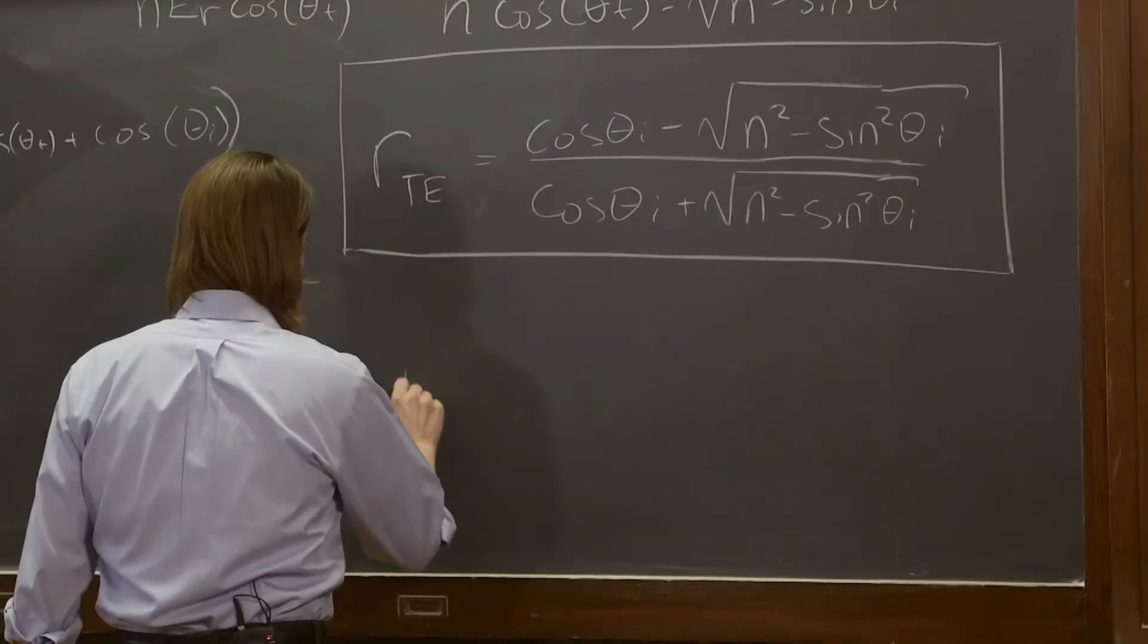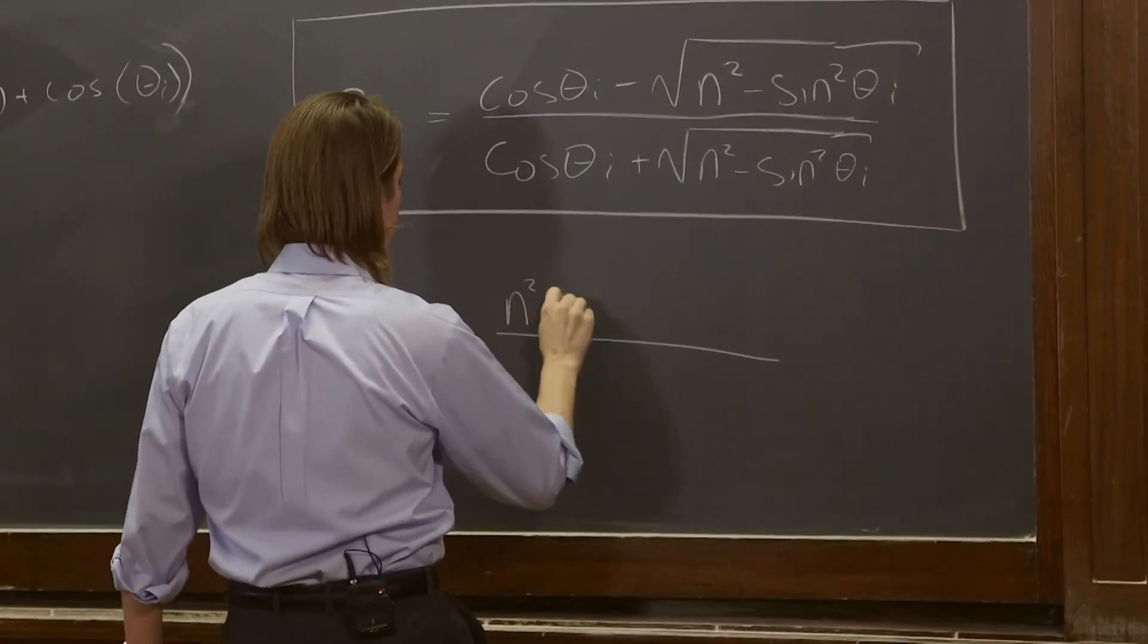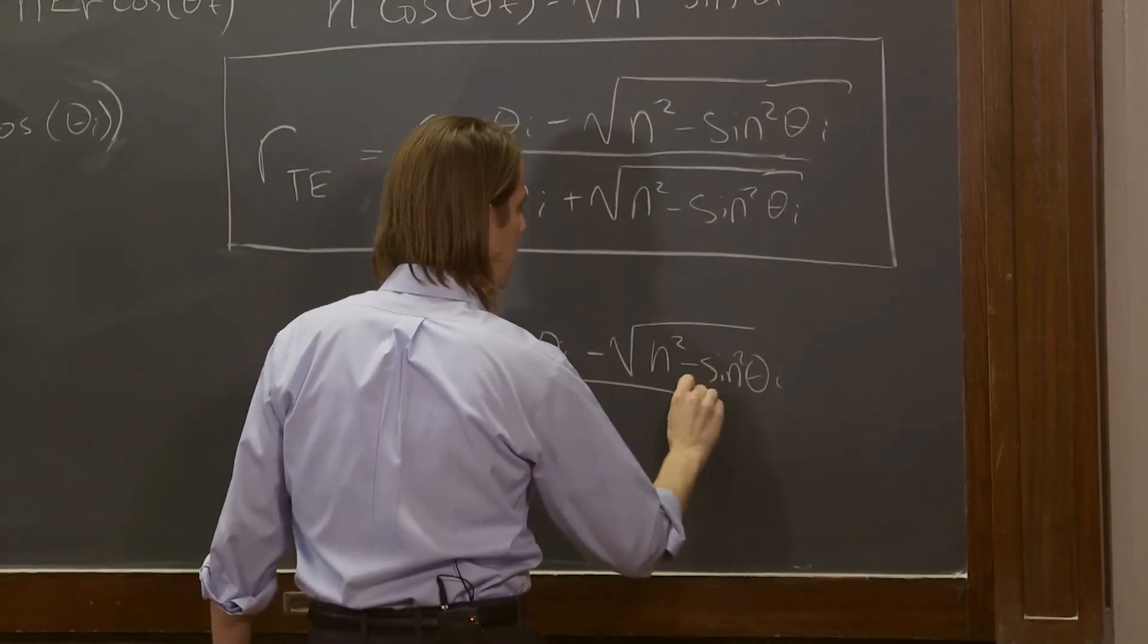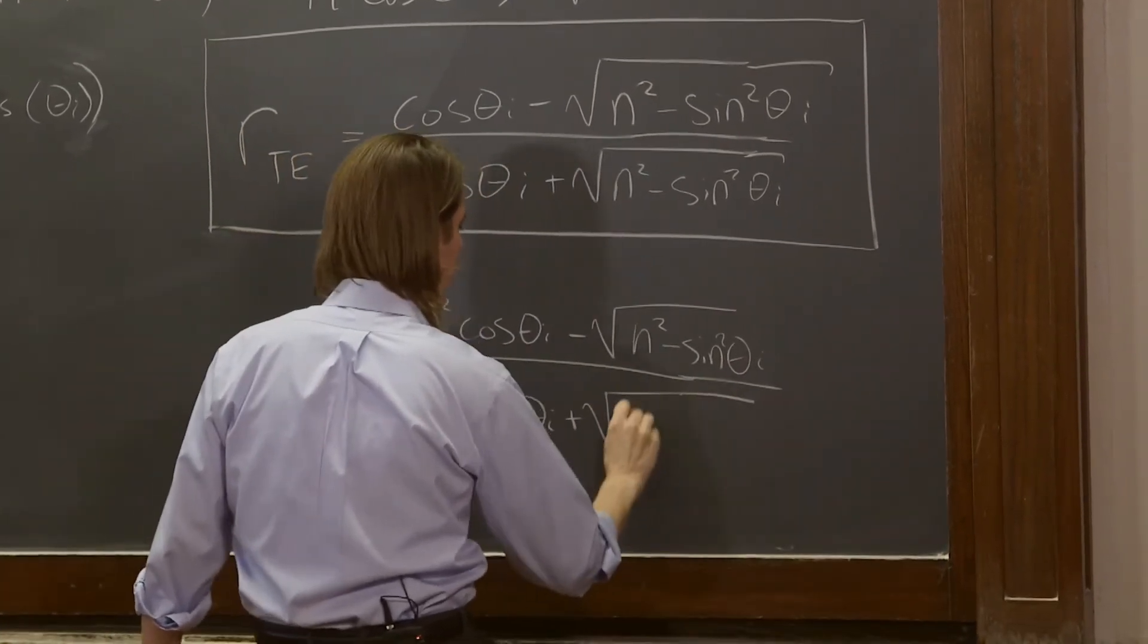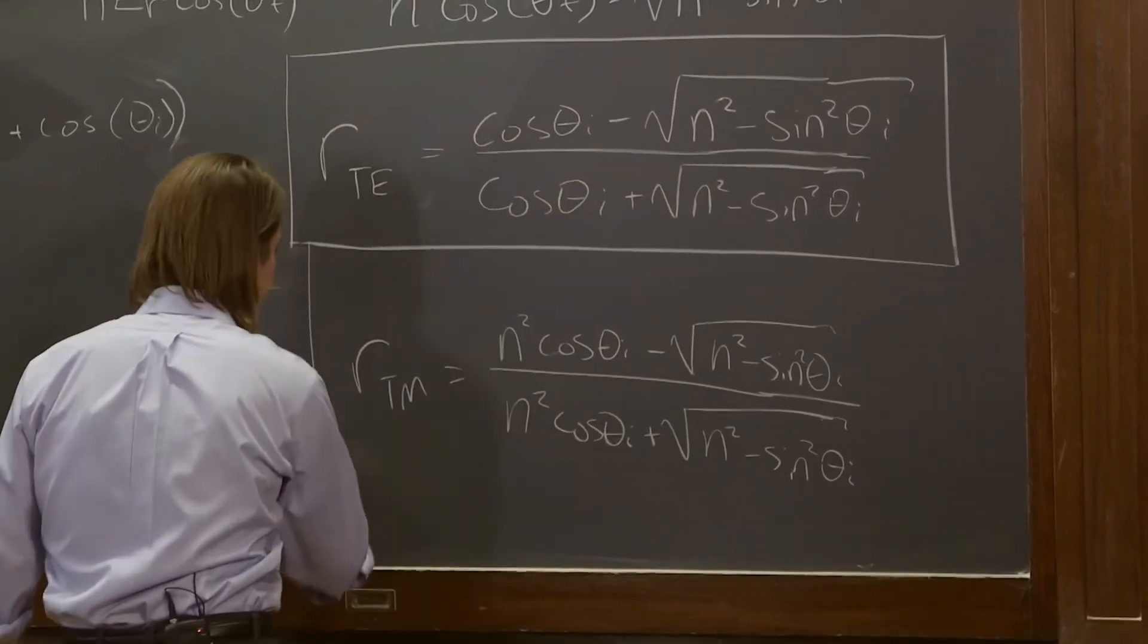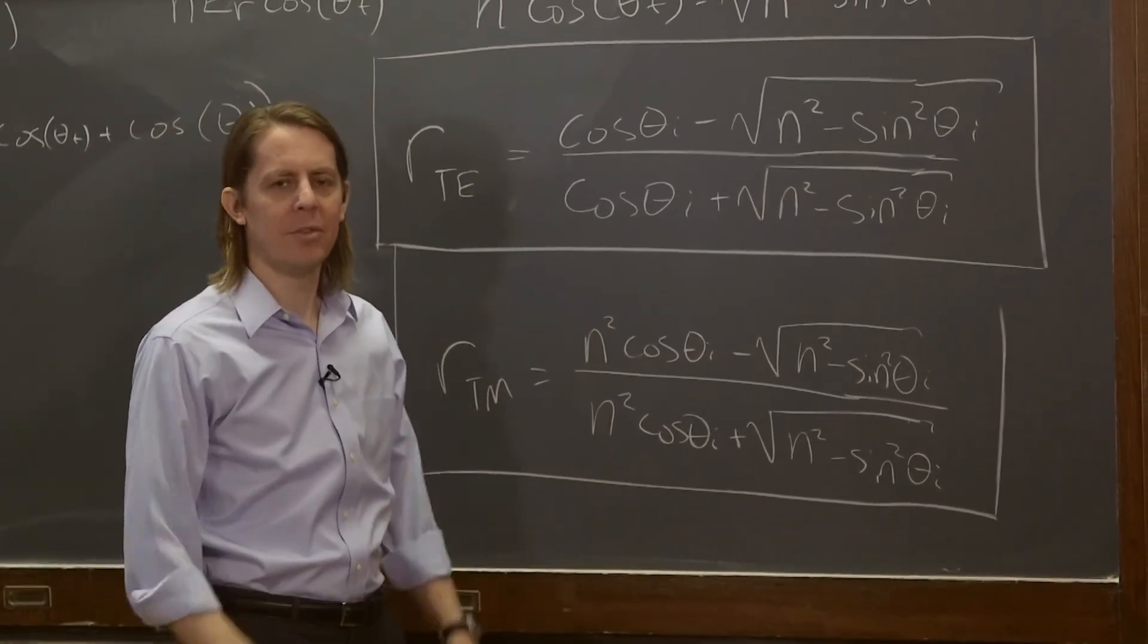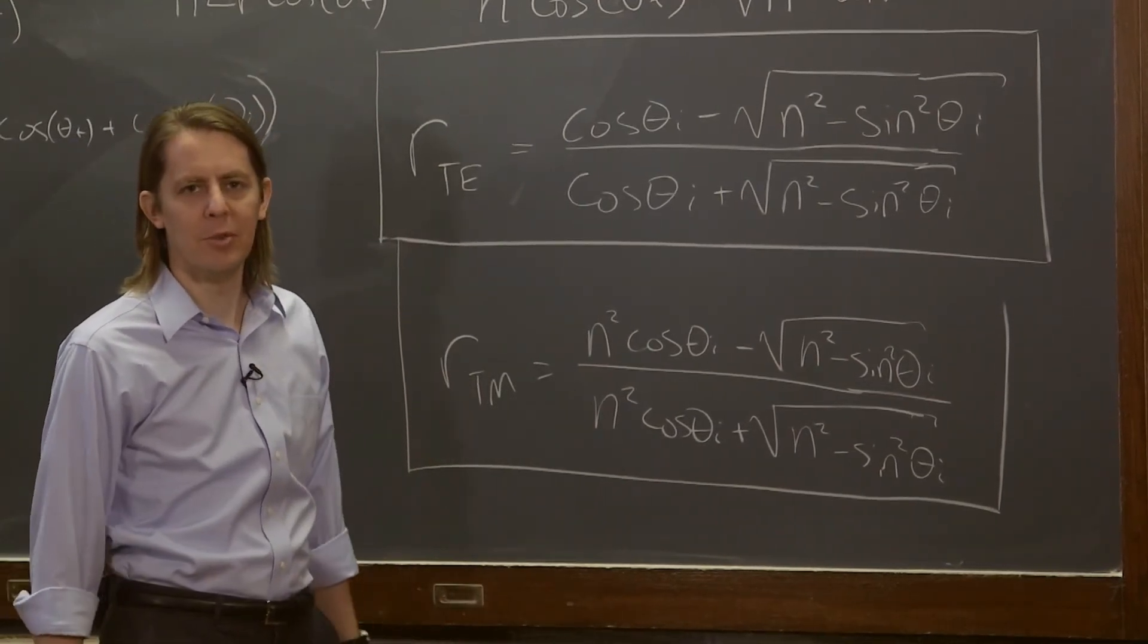We could do the whole thing again for RTM, but I'm just going to give you the answer. RTM equals n squared cosine θI minus the square root of n squared minus sine squared θI over n squared cosine θI plus the square root of n squared minus sine squared θI. So that is RTM. I'll let you do that one on your own if you want. It's a very similar situation, you just do it for the different field alignment at the boundary, but all the math is pretty similar. So now we have rTE and RTM. Now we can see where they tell us about the amplitudes of the waves when they reflect.